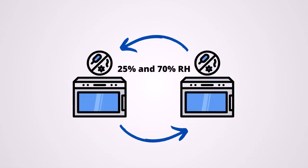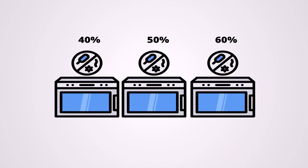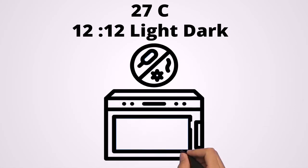In the second experiment, 10 clutches of eggs were put into 25% and 70% relative humidity growth chambers, but were switched back and forth between both humidities to allow exposure to both. Next, 20 clutches of eggs were compared in three different growth chambers at 40%, 50%, and 60% relative humidity. Regardless of the humidity, every growth chamber maintained a constant temperature of 27 degrees Celsius, or 80.6 degrees Fahrenheit, with a photoperiod of 12 hours light and 12 hours off.